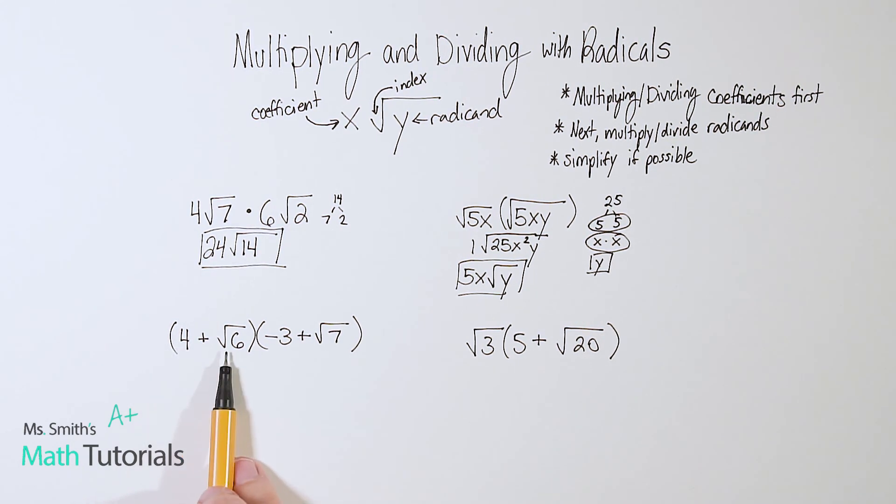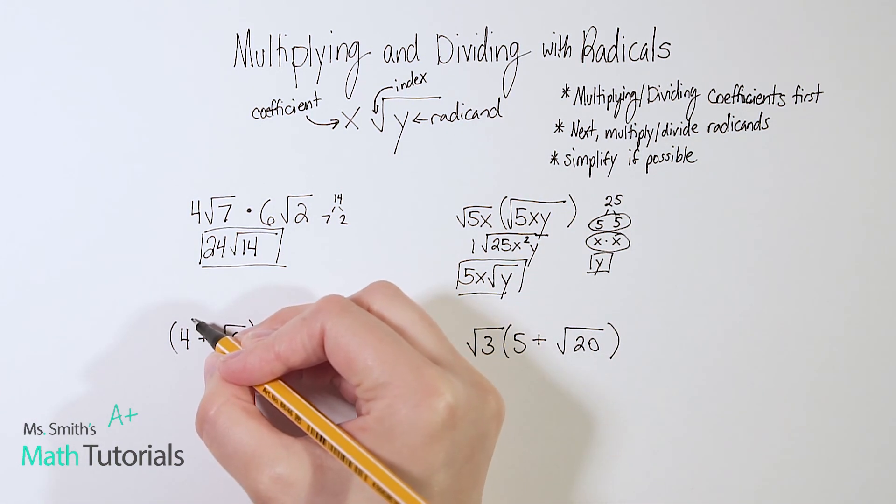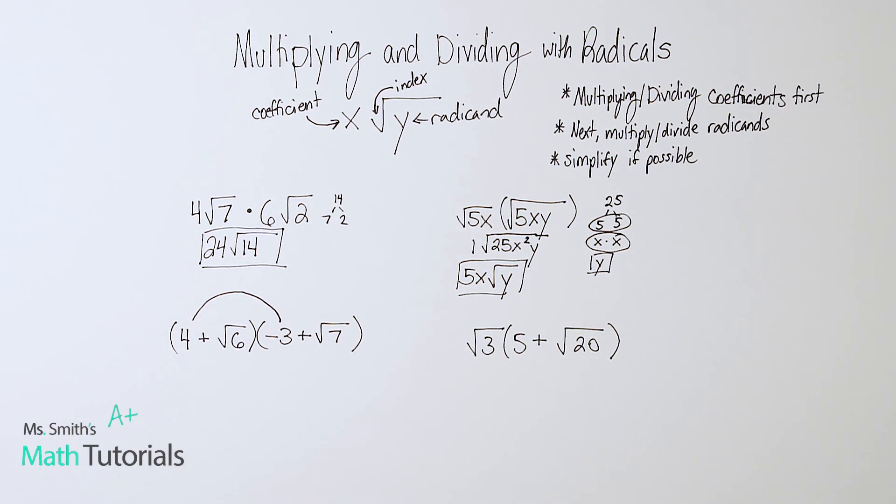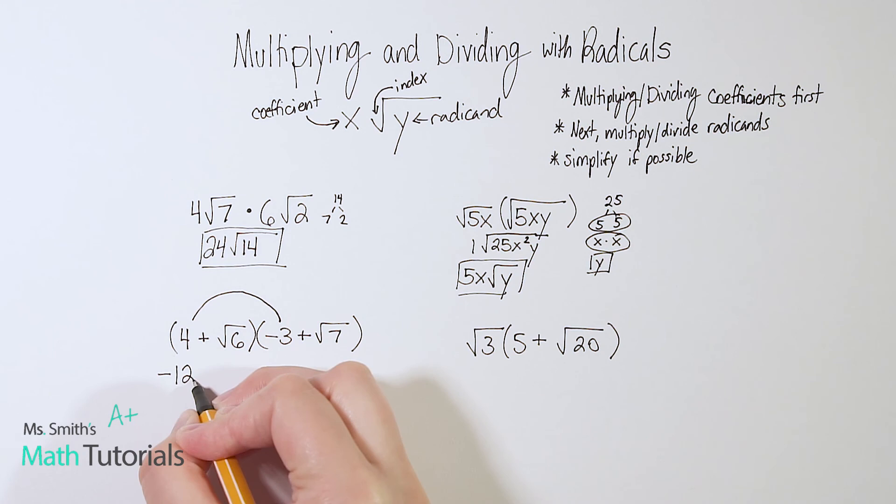Down here I've got a binomial times a binomial. So hopefully you think FOIL. Anytime you hear binomial times binomial, you should think FOIL. First, outer, inner, last. So let's follow those FOIL rules, also keeping in mind my multiplying radicals rule. So the first would be 4 times negative 3, which is negative 12.